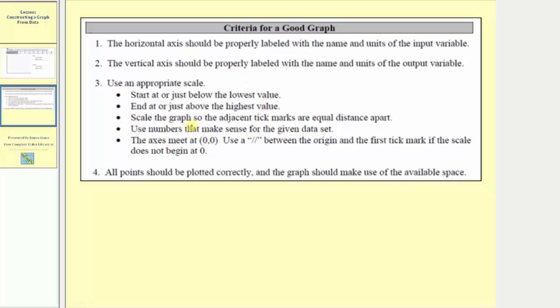We want to scale the graph or the axes so the adjacent tick marks are equal distance apart. We want to use numbers that make sense for the given data set. And the axes meet at the point zero comma zero or the origin. We want to use two forward slash marks between the origin and the first tick mark if the scale does not begin at zero, indicating there's a break in the number line. All points should be plotted correctly and the graph should make use of the available space.